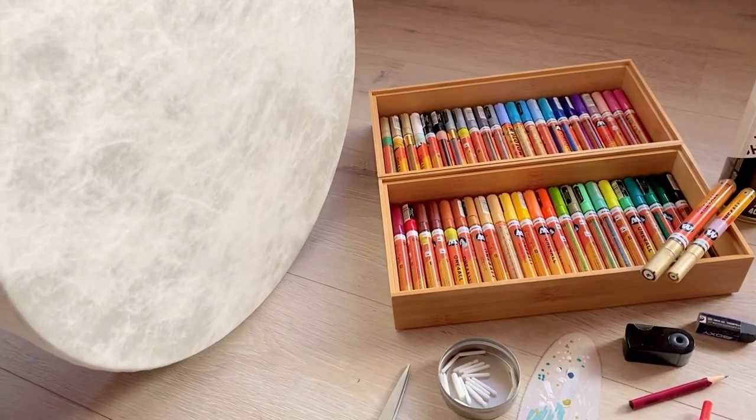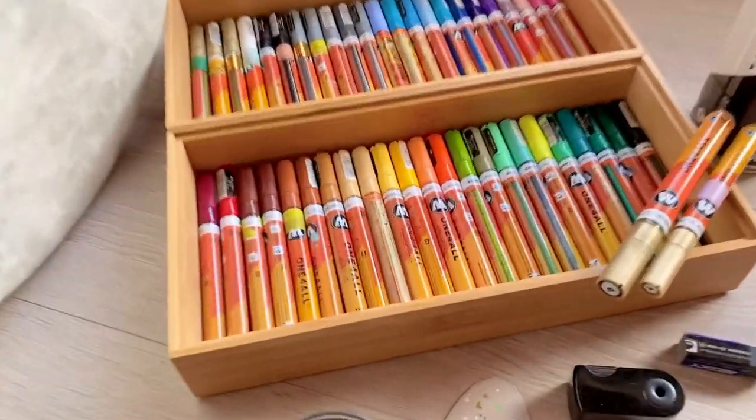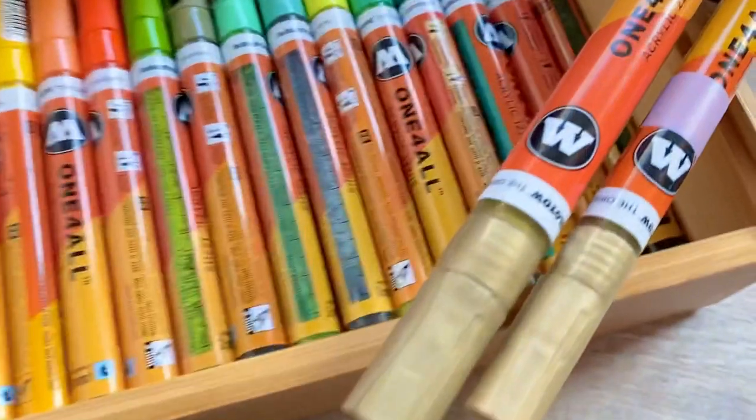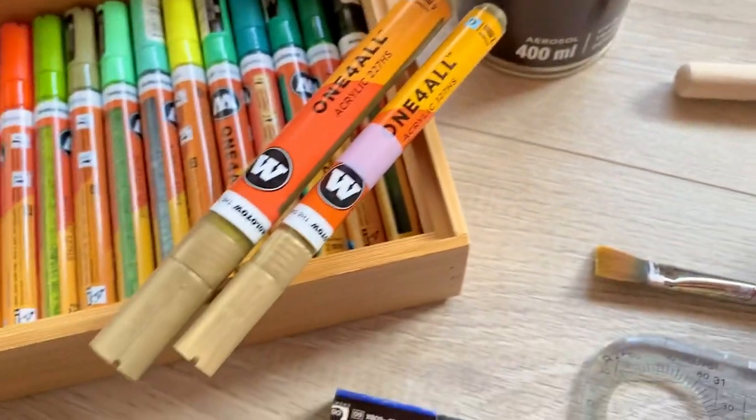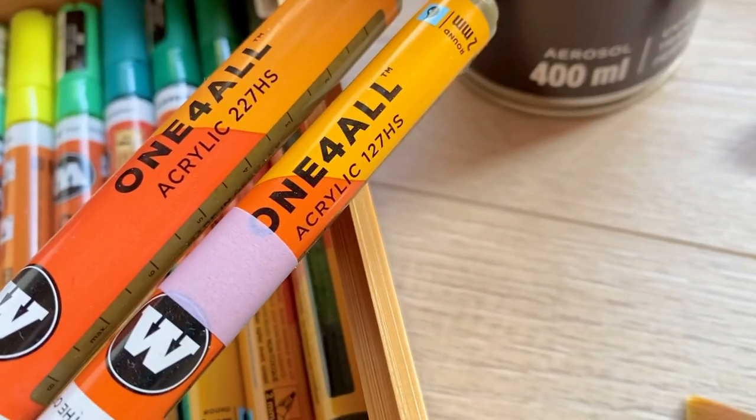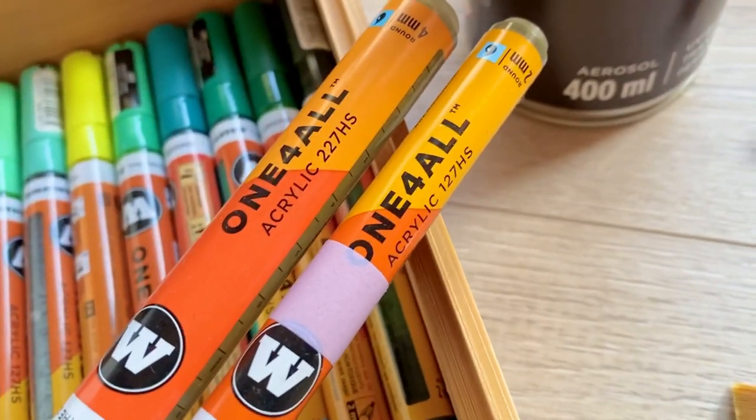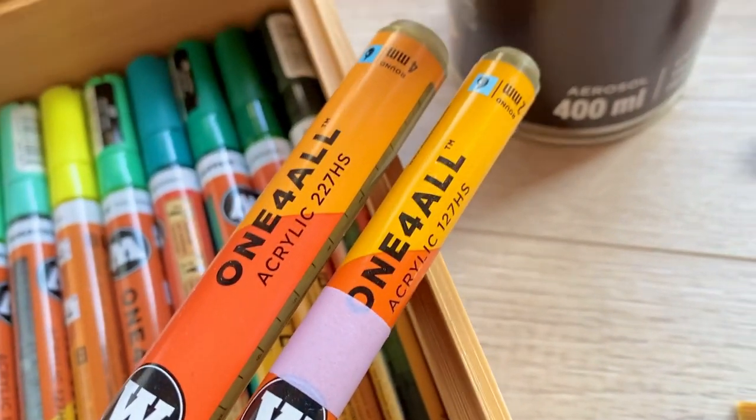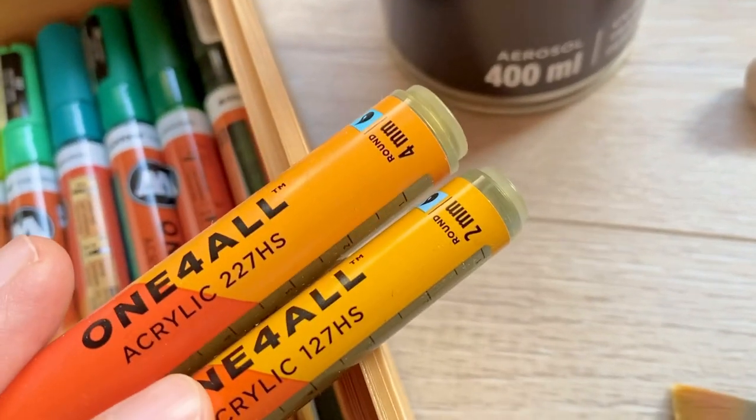These are the markers that I use. They're called Molotow One For All acrylic markers and at the moment I use these two. This is the acrylic 127HS which is the smaller nib and this 227HS is the bigger nib. So here you see two millimeters and four millimeters.